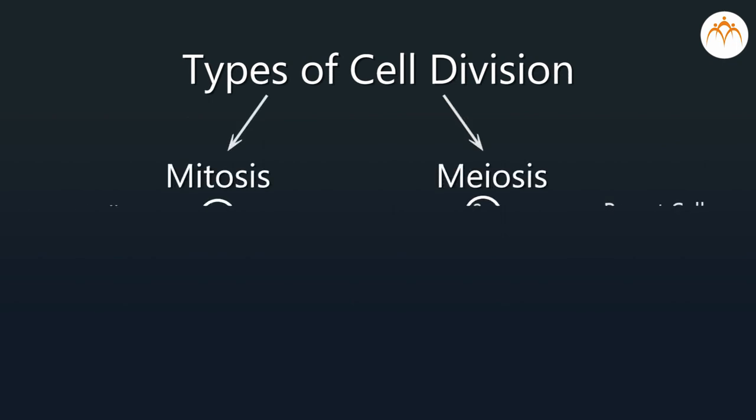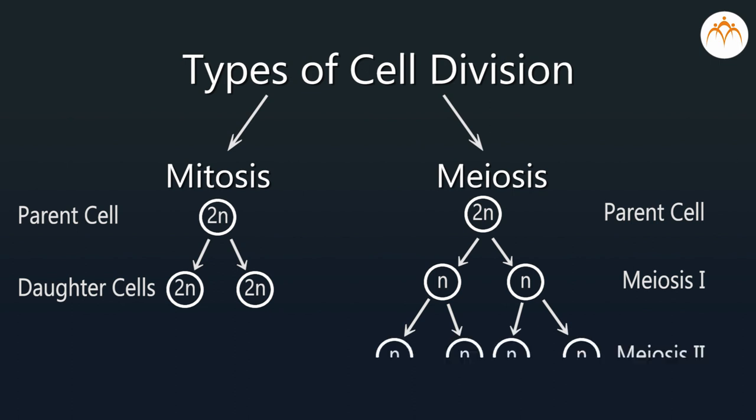Hello students. In the second chapter of life processes, you have studied respiration, cell division, etc. Now in this chapter, let's study about one of the most important life processes of living organisms — that is reproduction. Do you know what reproduction is, why it is necessary, and how organisms look alike and different at the same time? Reproduction is the process by which parents give rise to the next generation or new individuals of the same kind.